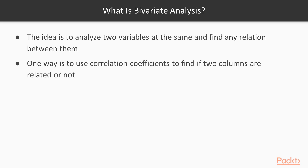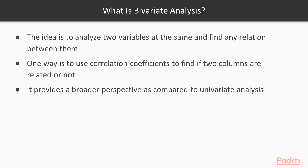We'll discuss correlation coefficients in the next video. The primary motive behind bivariate analysis is to find any association that may exist between the two variables or columns that we are analyzing. It provides a broader perspective compared to univariate analysis, because in univariate analysis we were analyzing columns one at a time and not taking into consideration if they were affected by values of any other column.